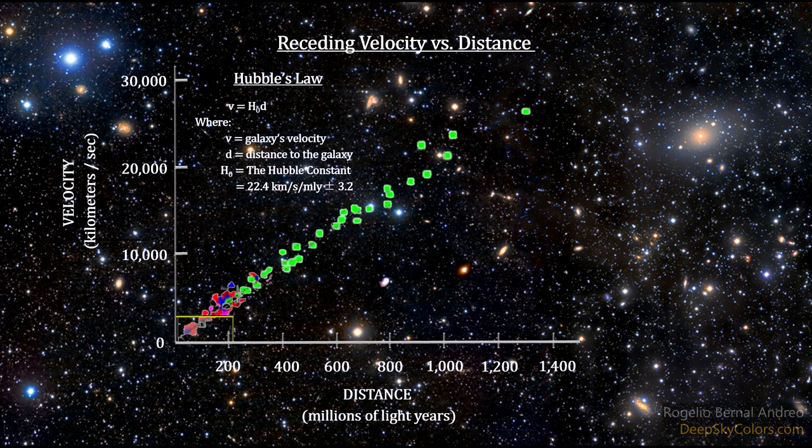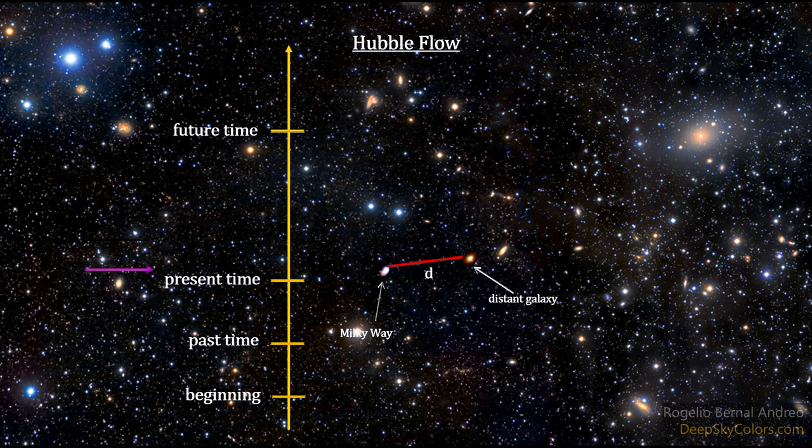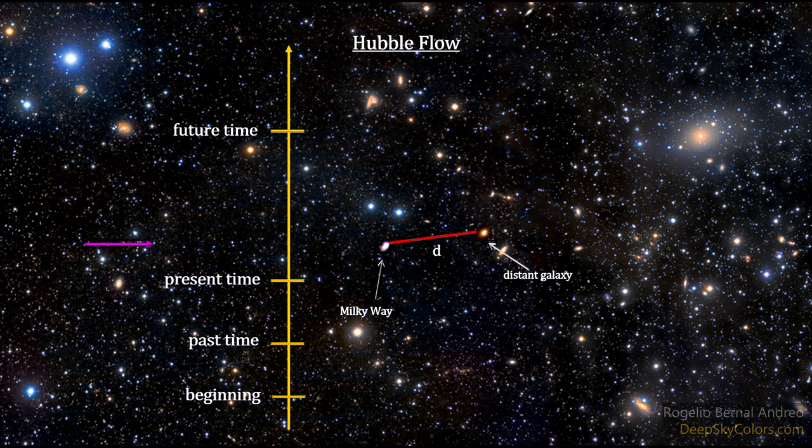That is, a receding velocity of a galaxy goes up by 22.4 kilometers per second for each additional million light years away from us it is. This slow and steady movement of galaxies away from us is called the Hubble flow.